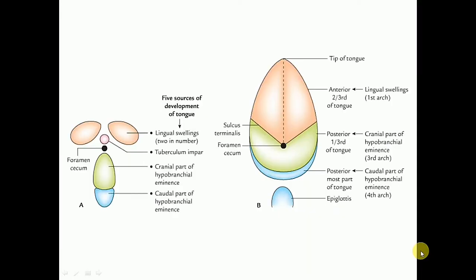All these structures contribute to the formation of the tongue. The two lingual swellings and the tuberculum impar fuse and form the anterior two-thirds of the tongue, which is mainly derived from the first arch.